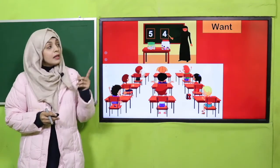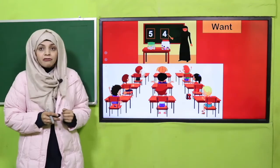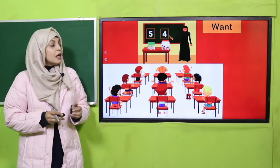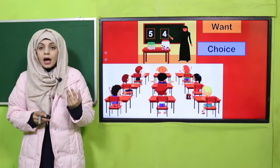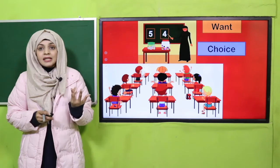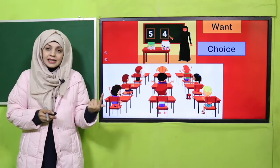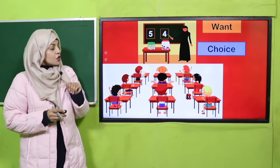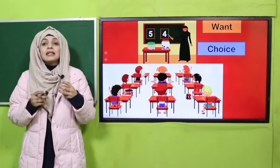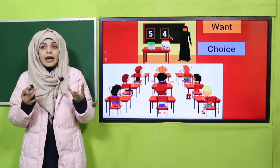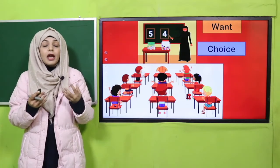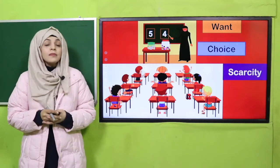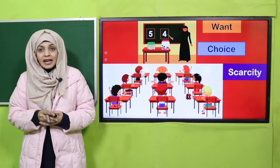Is activity se humne kya seekha? Ke humein dono cheezein chahiyein thi — jellies bhi aur candies bhi — lekin wo poori quantity mein nahi thi. So then we made a choice: ya toh hum candy le sakte hain ya hum jelly le sakte hain. Jab koi cheez kam ho jaati hai toh humein choice karni padti hai. Isi kami ko hum kehte hain scarcity.